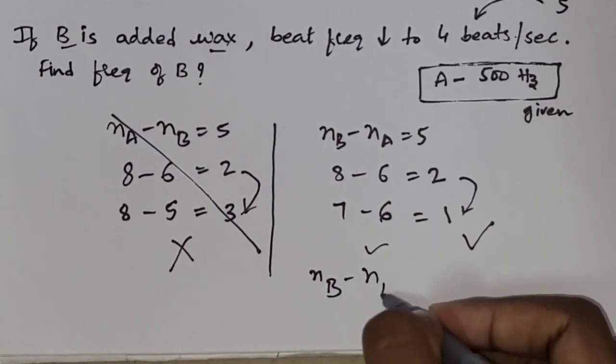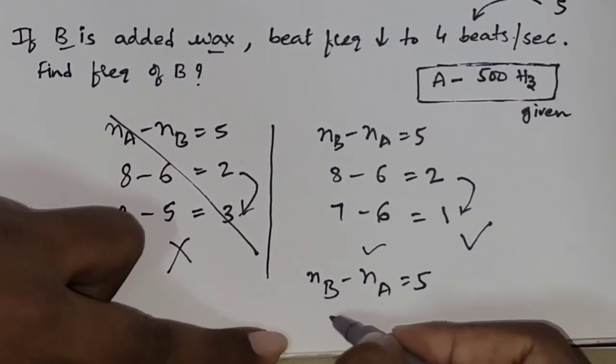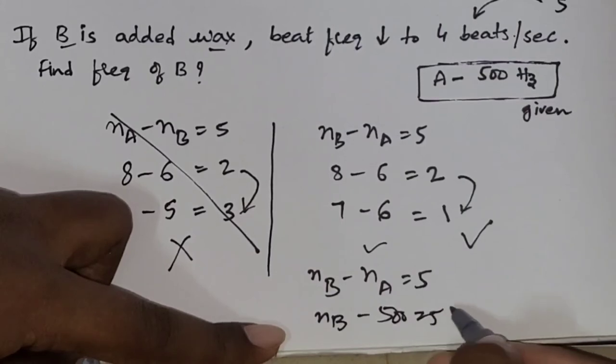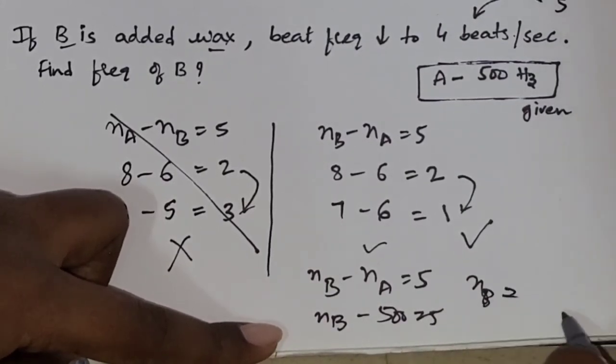So, NB minus NA equal to 5. NB, we have to find. Minus 500 equal to 5. Now, NB becomes 500 plus 5. That is 505.